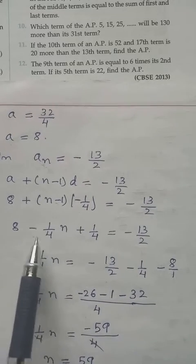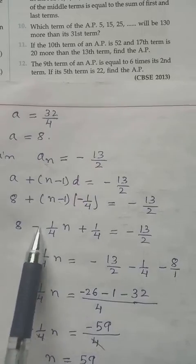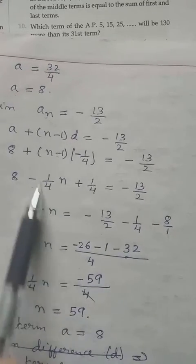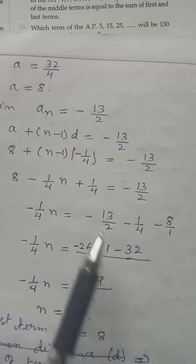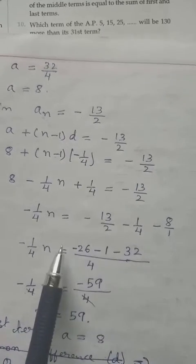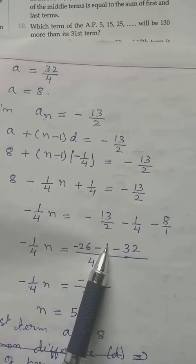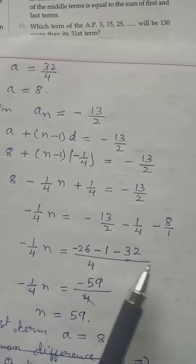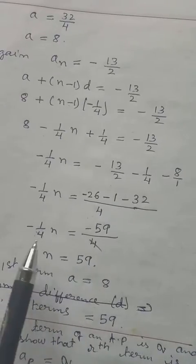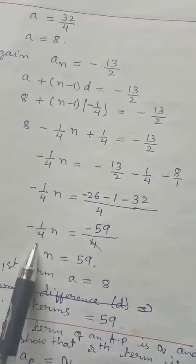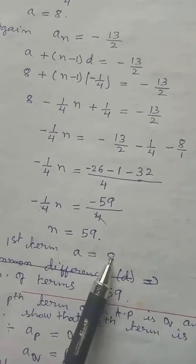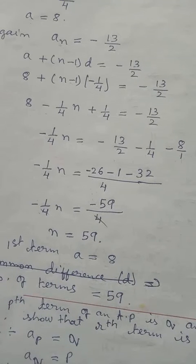Using the formula an = a + (n−1)d: −13/2 = 8 + (n−1)(−1/4). Finding LCM and rearranging: (n−1)(−1/4) = −13/2 − 8. LCM of 2 and 1 is 2: (−13 − 16)/2 = −29/2. So (n−1) = −29/2 ÷ (−1/4) = −29/2 × (−4) = 58. Therefore n = 59. The first term is 8 and the number of terms is 59.